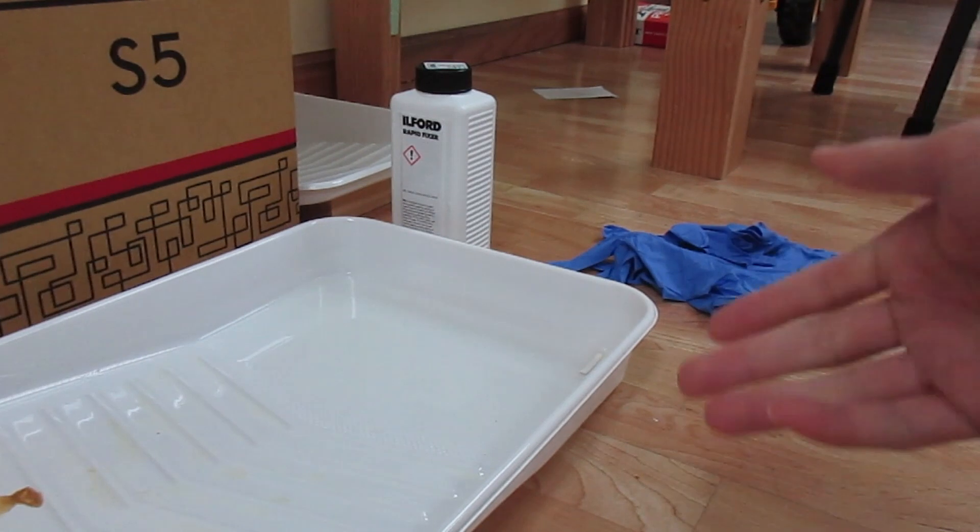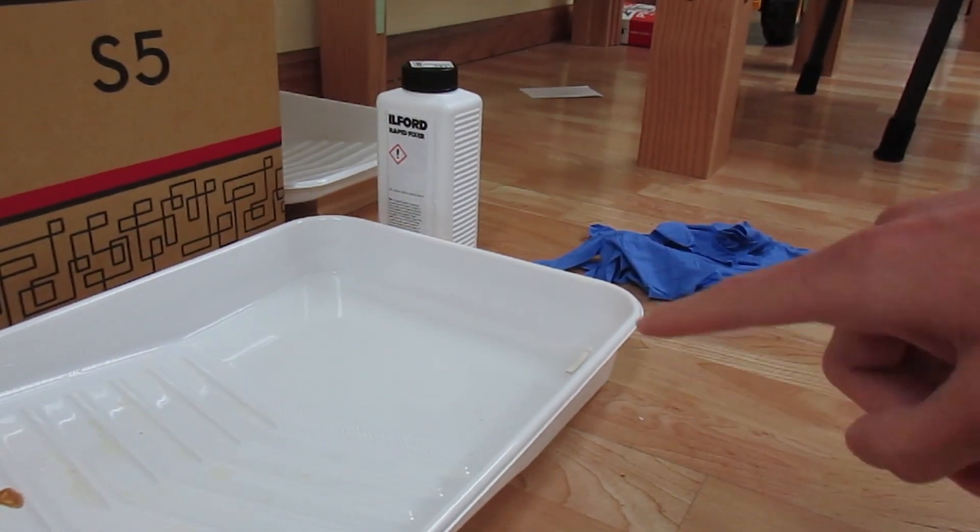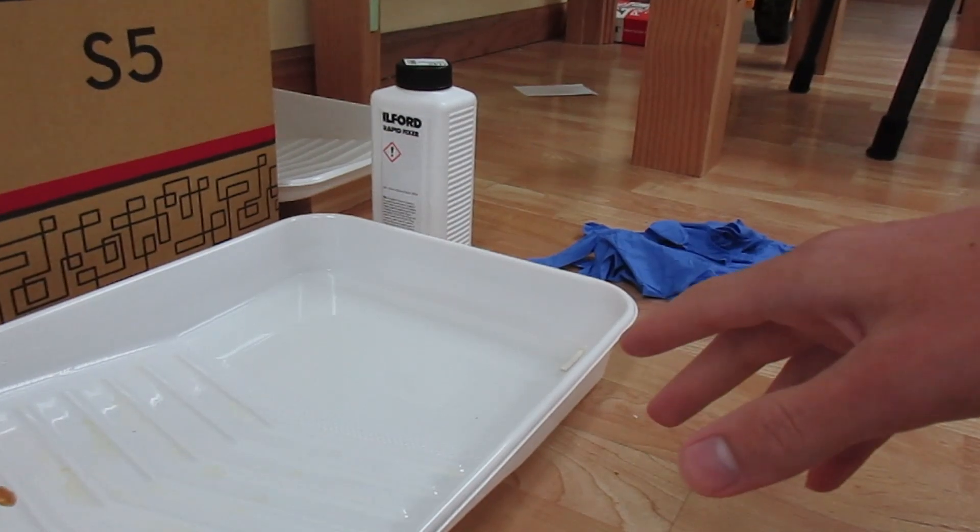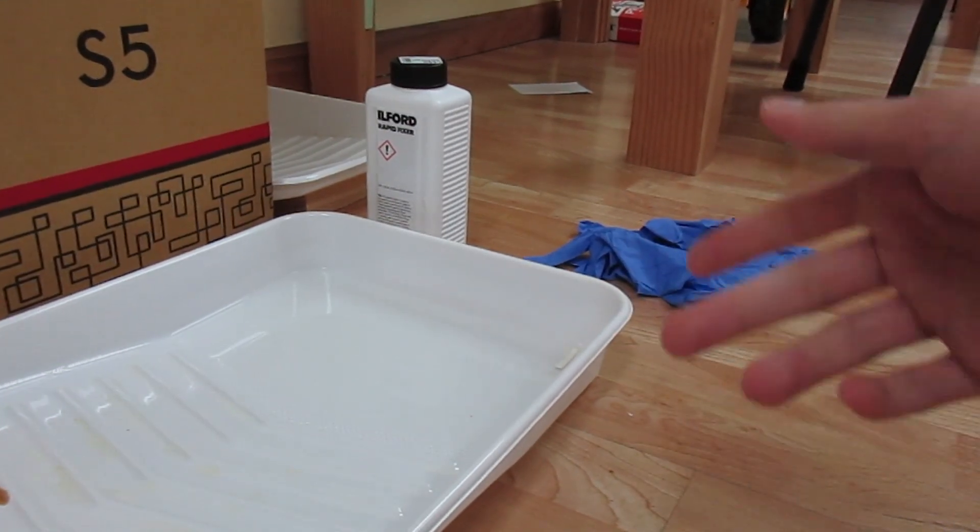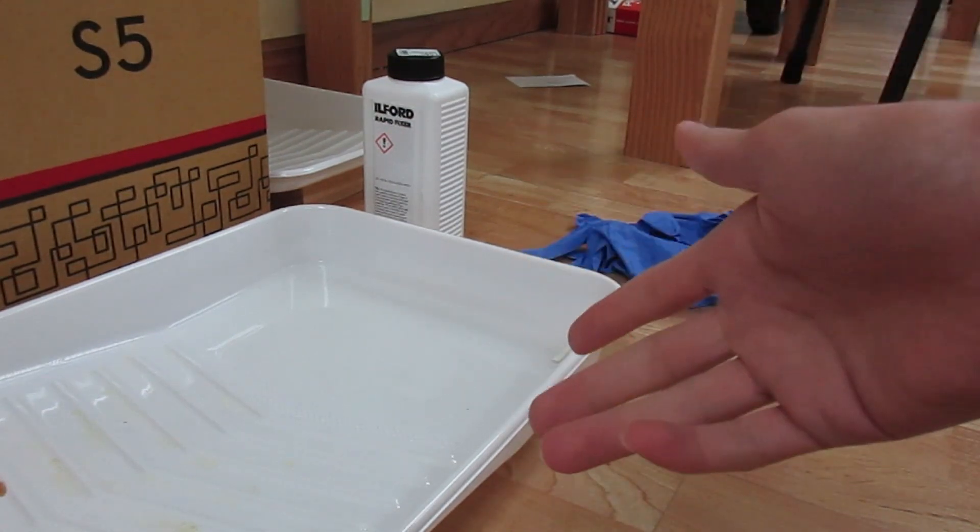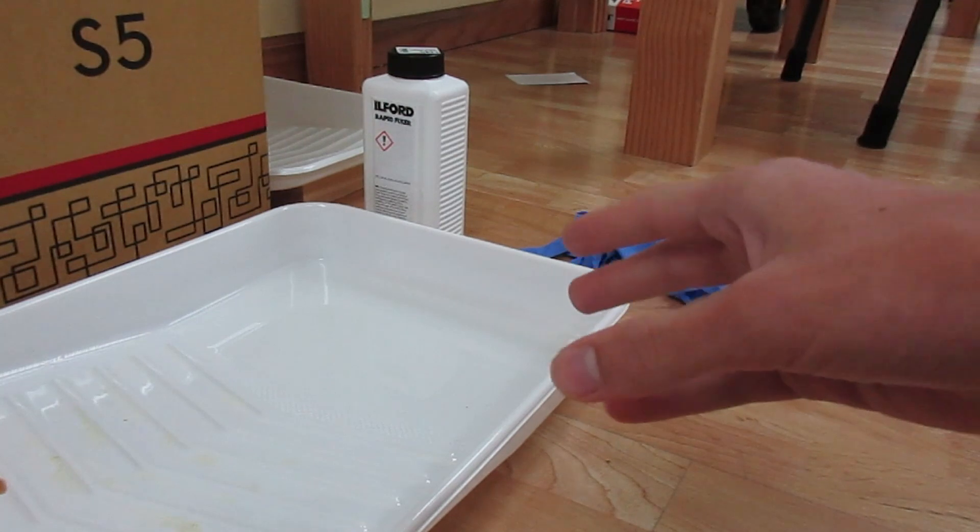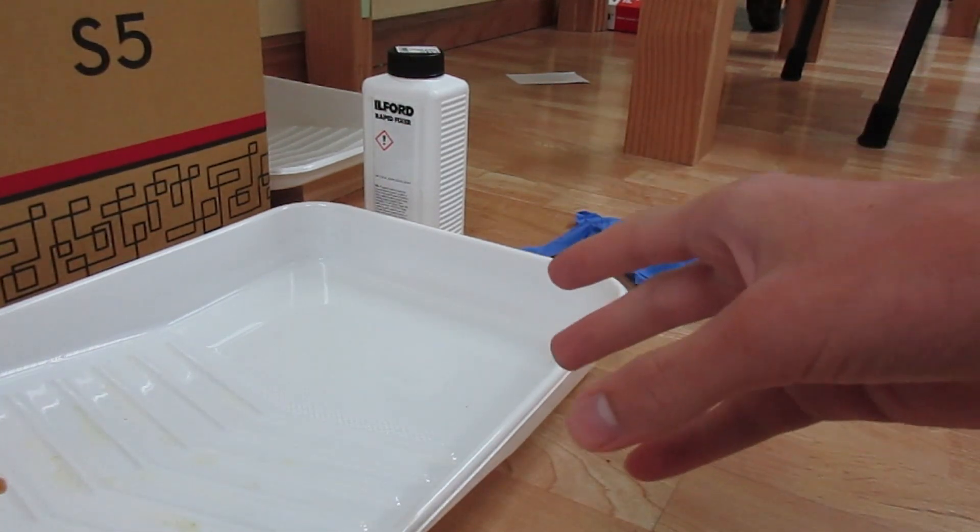I'm using real fixer, but for the photo prints you can use 500 milliliters of water and 150 grams of salt. The homemade salt fixer only seems to work for the prints, not the film, but you don't actually really need to fix film.